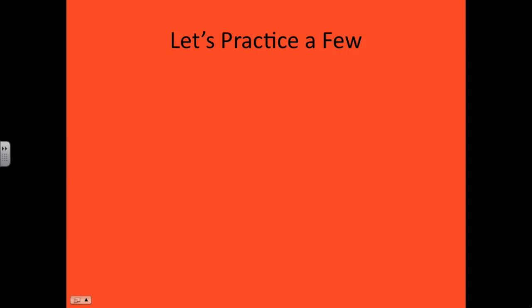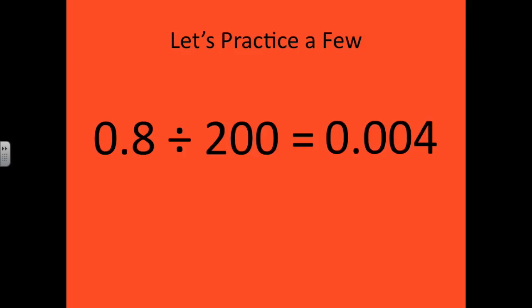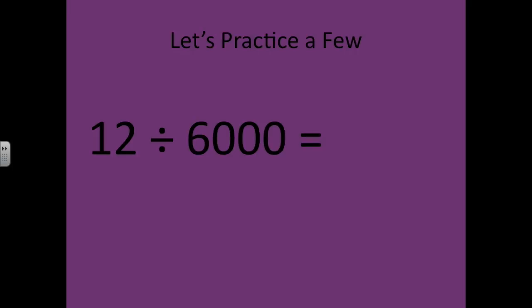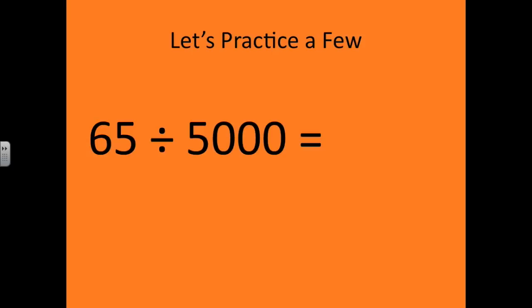Okay, now I want you to practice a few on your own. You can solve them in your notebook, but you'll type them in here and find out if your answer is correct right afterwards. So let's start with 8 tenths divided by 200: 4 thousandths. 1 and 6 tenths divided by 400: 4 thousandths. 12 divided by 6,000: 2 thousandths. 65 divided by 5,000: 13 thousandths.